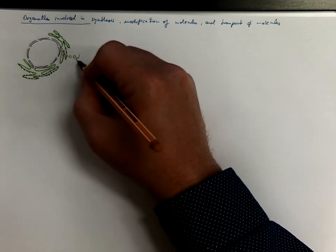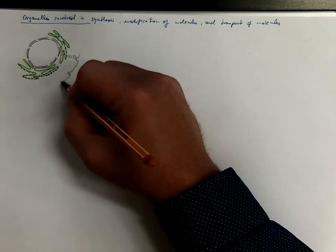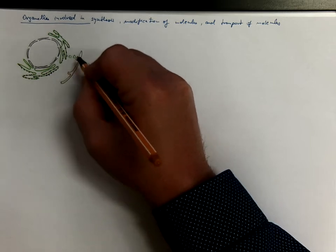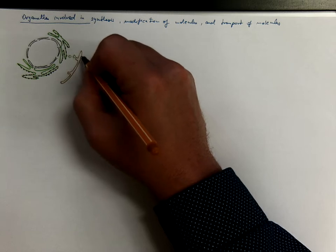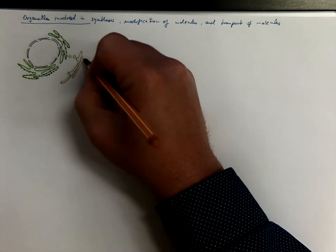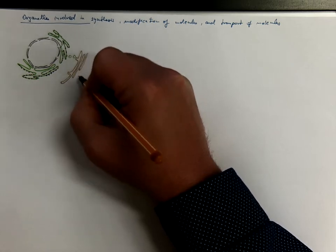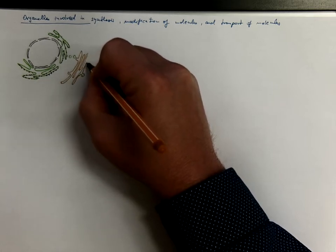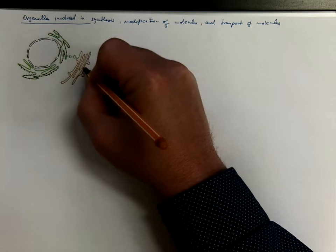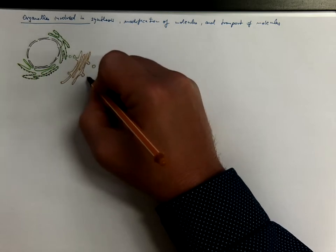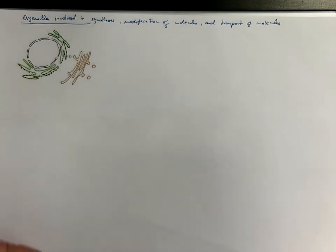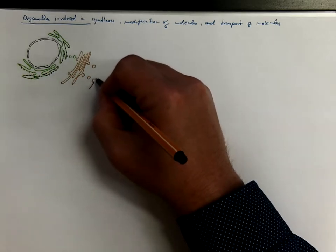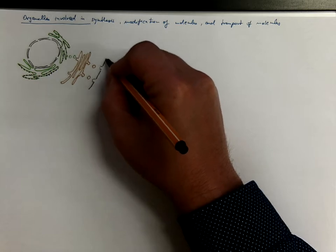And we got some transport vesicles that pass from the endoplasmic reticulum to the Golgi complex, which has two faces. The one that is diverted to the endoplasmic reticulum is the cis, while the opposite facing the cell surface is trans. And that's where the transport vesicles are formed and they go to the cell membrane, where they undergo exocytosis.